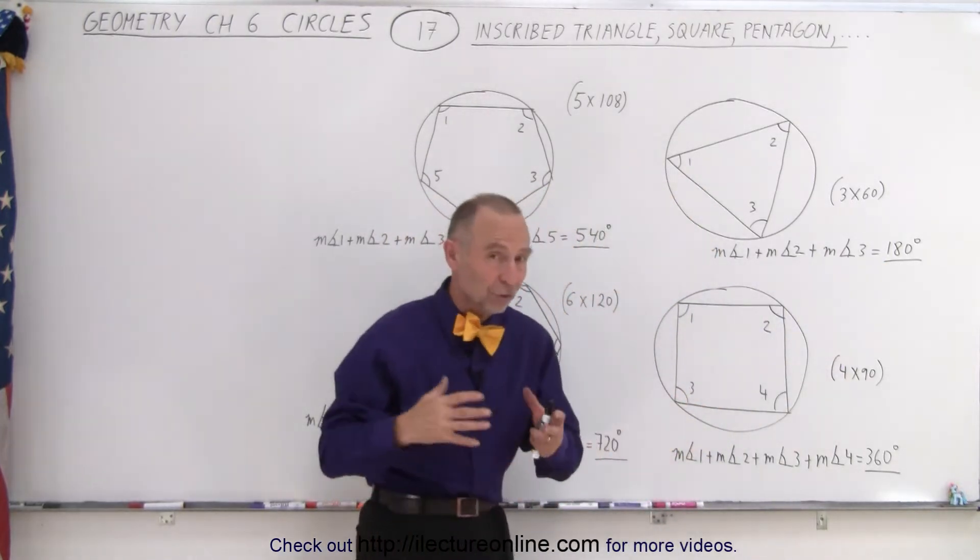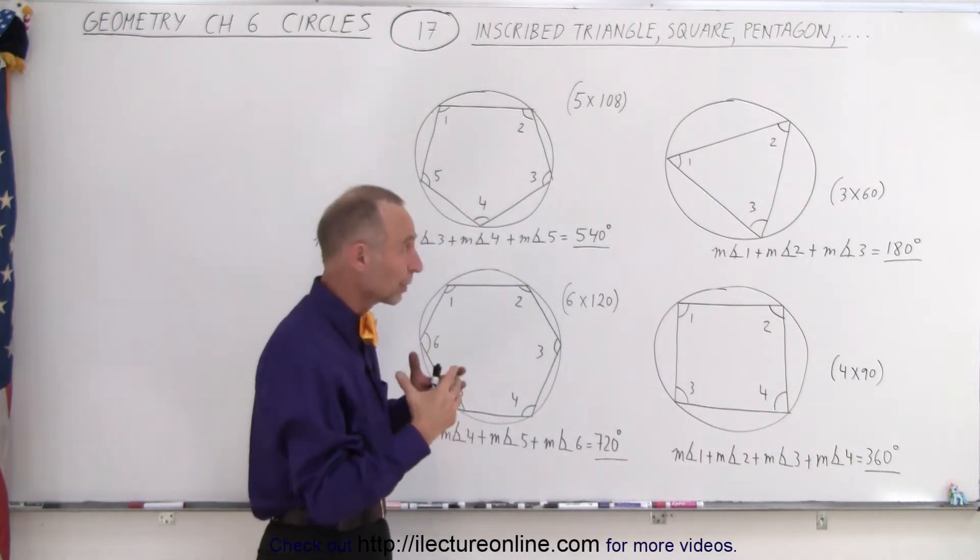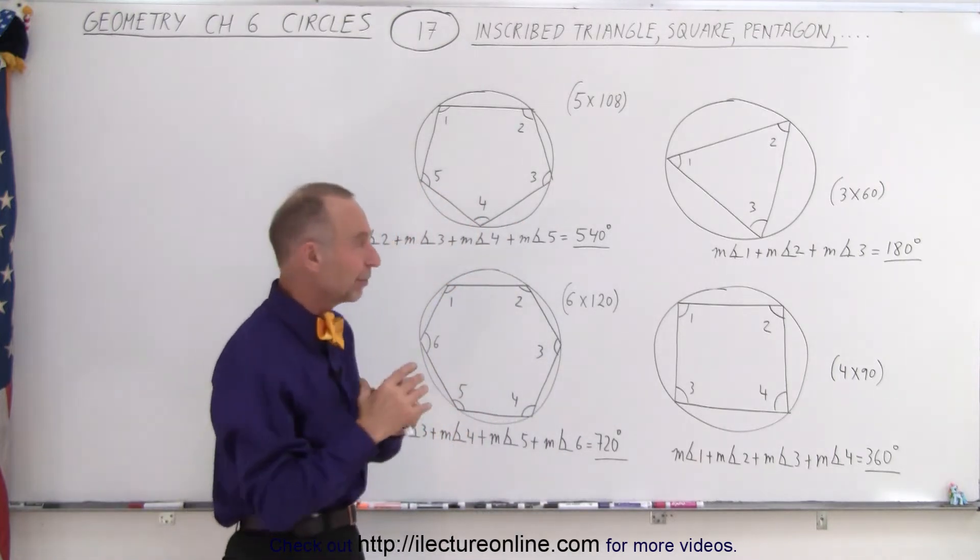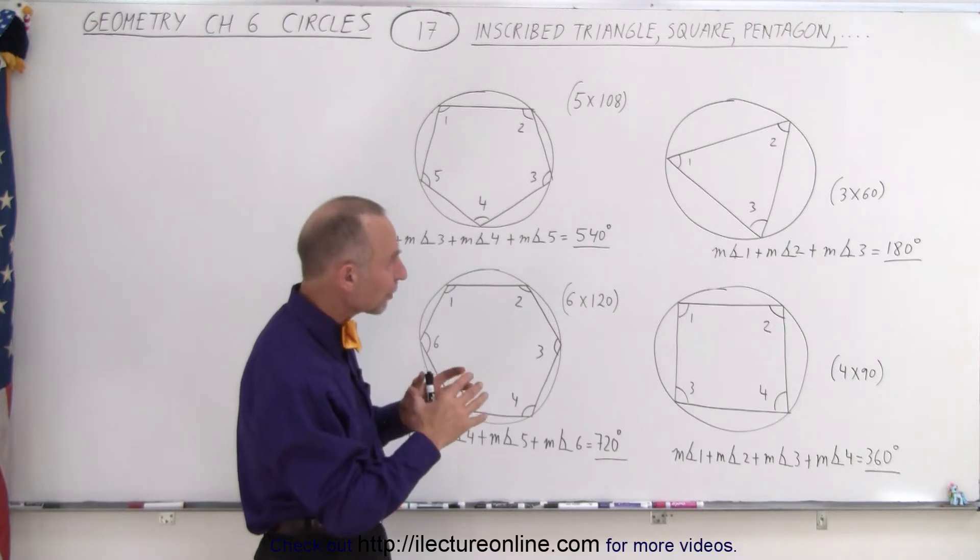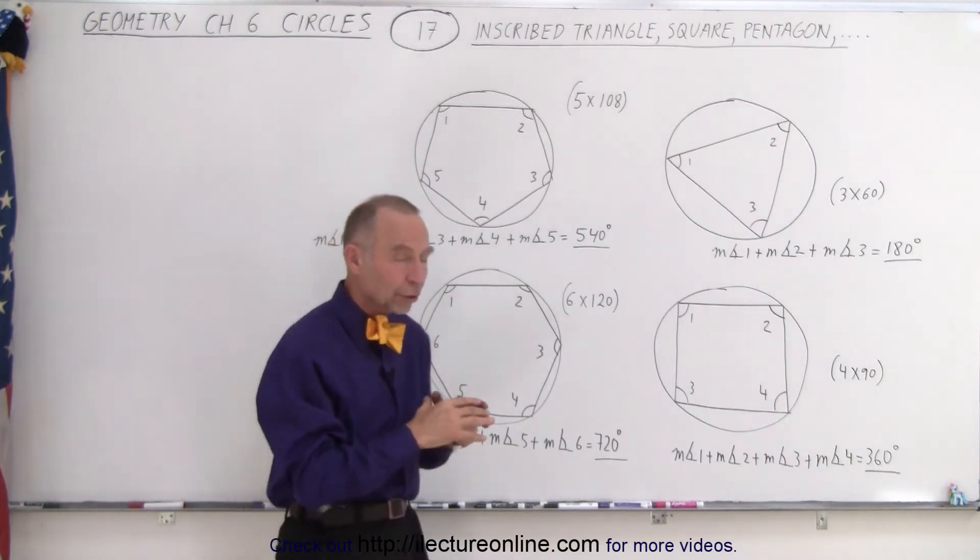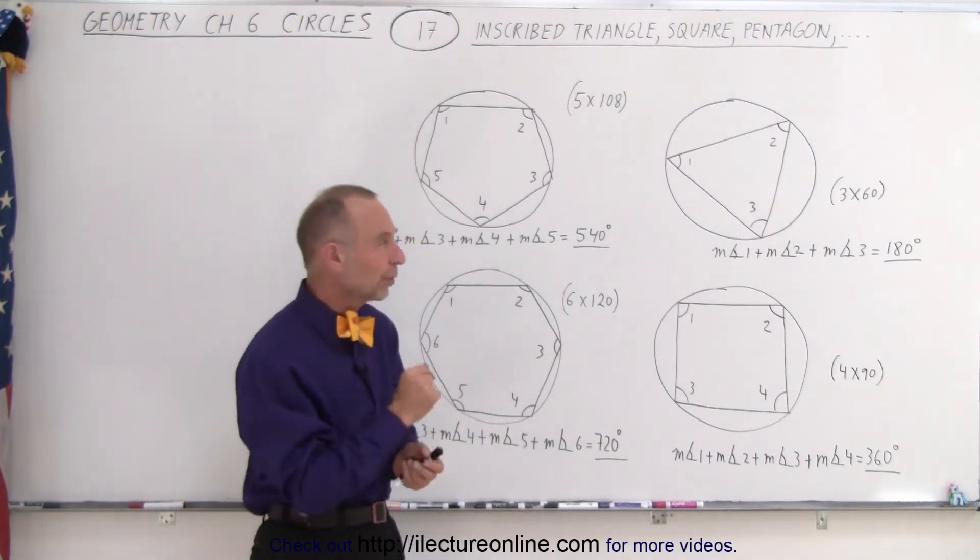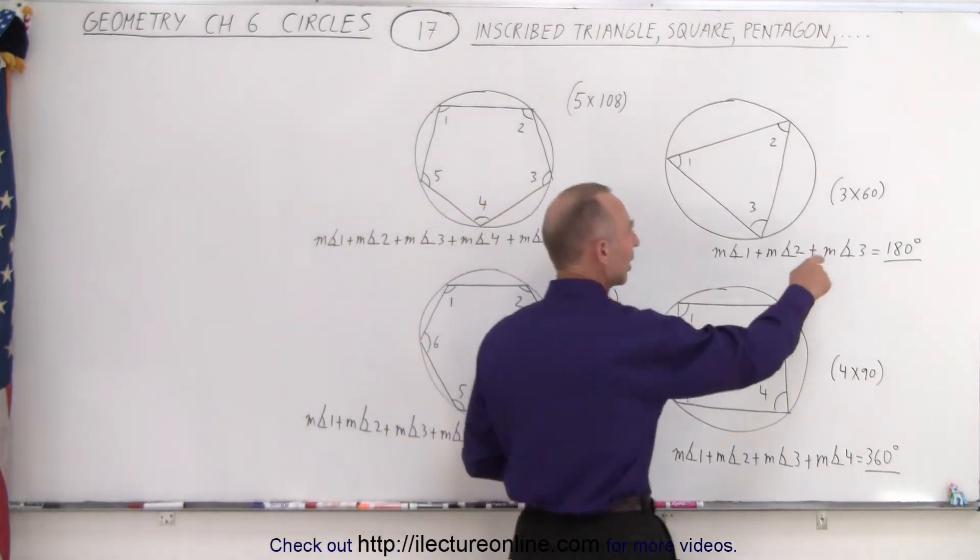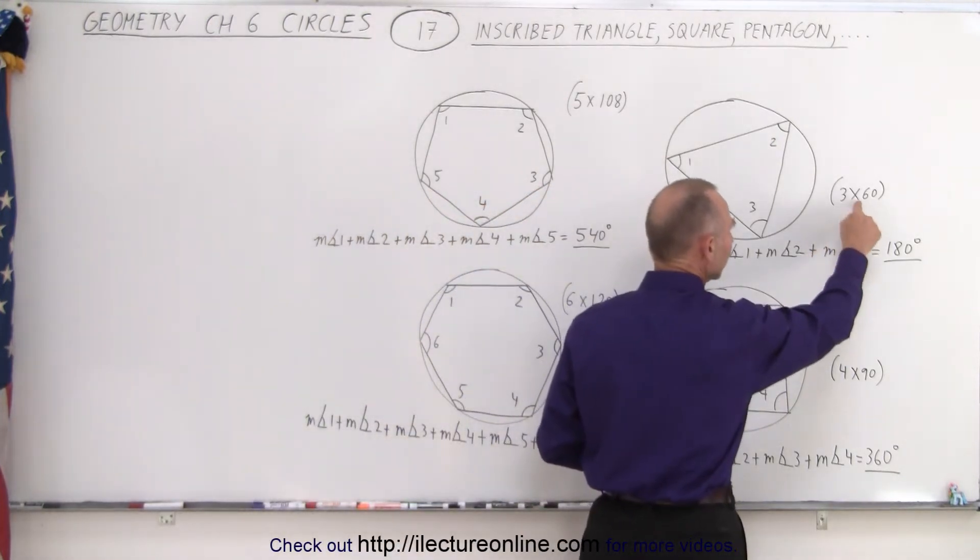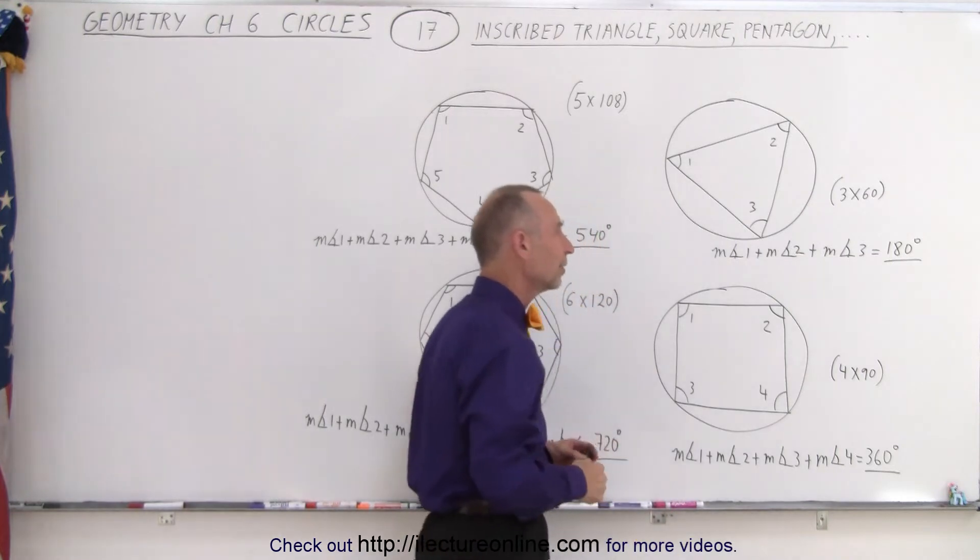Now of course you don't have to inscribe it inside a circle in order to accomplish that, but we want to have the reference for that. It doesn't matter if the angles 1, 2, 3 are congruent or not, the sum of the three always add up to 180 degrees. So the average size of the angle is 60 degrees, so 3 times 60 gives us 180 degrees.